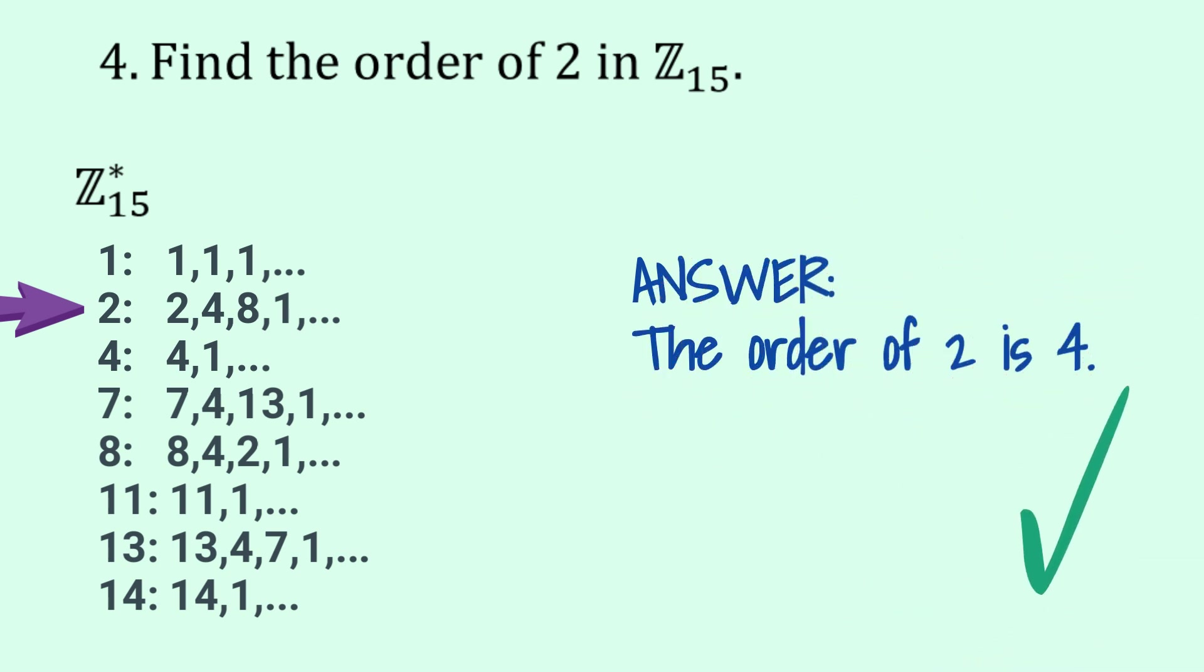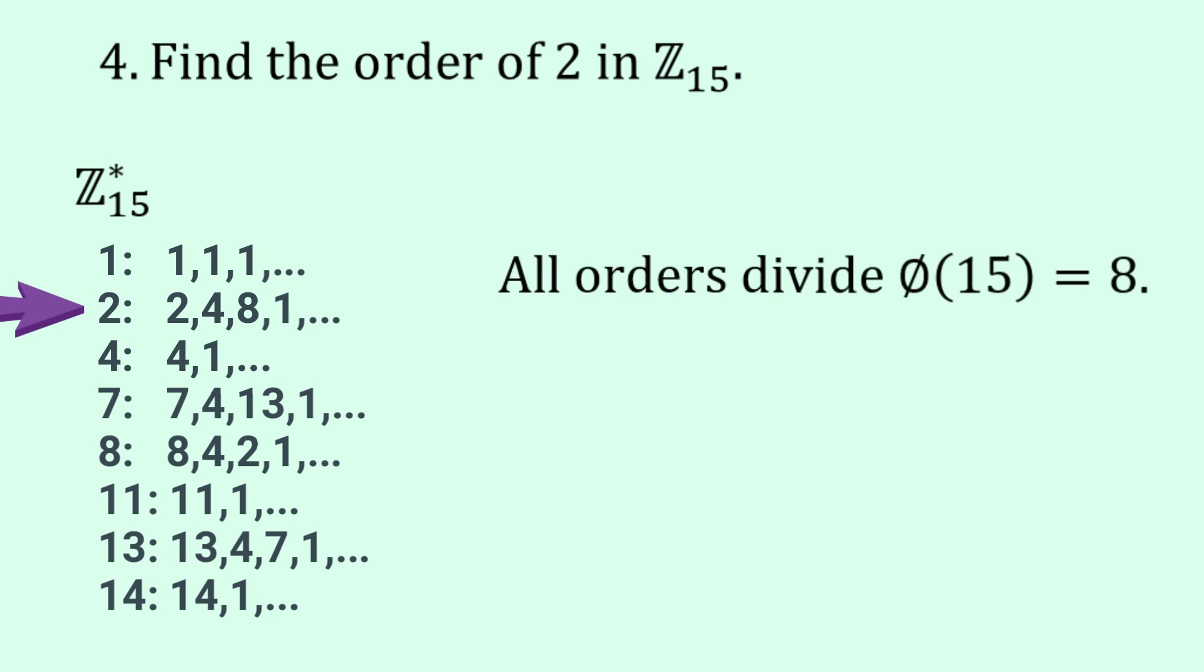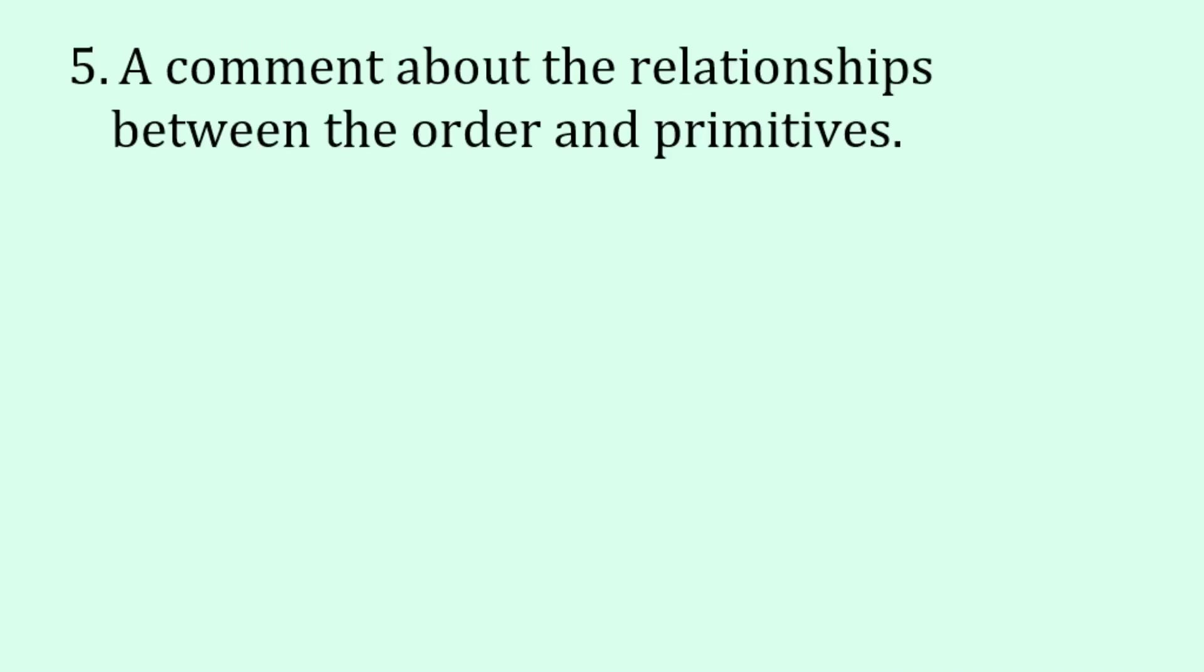And this time we can notice that all orders divide the number 8, and 8 equals phi of 15. So now let's go on to that fifth thing, which is really a bit optional, but will help you if you do harder questions. What's the relationship or relationships between the order and the primitive elements?